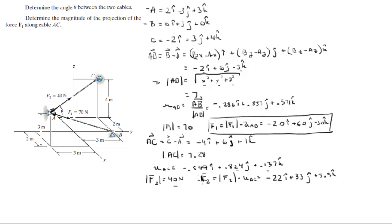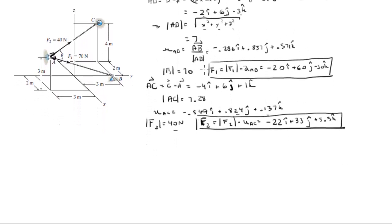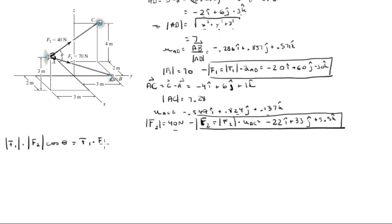Now that you have both vectors, we're going to find the angle between them. The angle between them can be found using the dot product, because you know that the magnitude of F1 times the magnitude of F2 times the cosine of the angle between them is equal to the dot product of the vectors. The dot product is a scalar, and so are these two magnitude values.